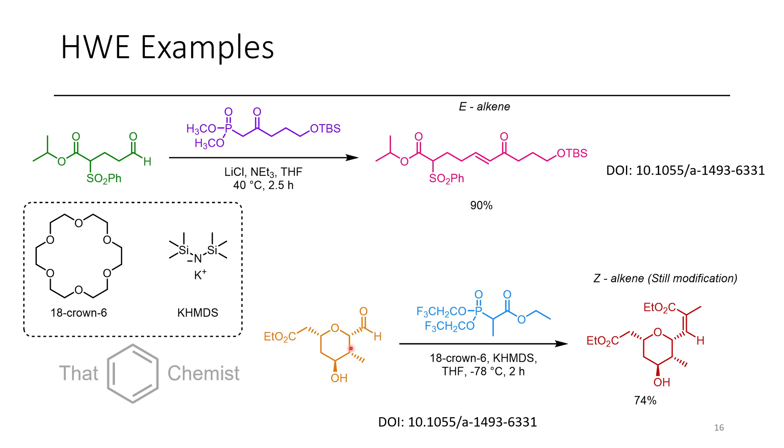Now, in this next case, we have this ester-containing tetrahydropyran ring. This is converted to a tri-substituted alkene, which is a Z-alkene because they use the Still modification. And so here's the two trifluoroethyl groups that I was talking about, and this is why they get Z-selectivity over the typical E-selectivity that you see with the Horner-Wadsworth-Emmons reaction.